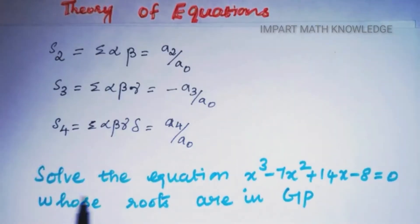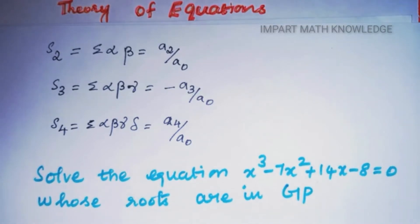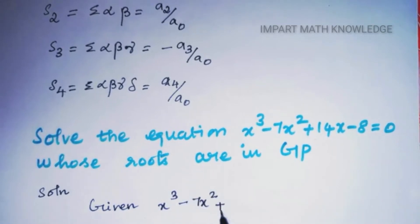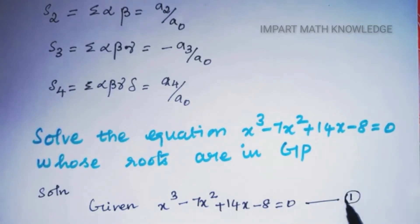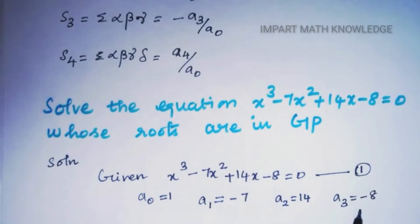The problem is: solve the equation x³ − 7x² + 14x − 8 = 0, whose roots are in GP. The condition given is that the roots are in GP form. For a third-degree equation, the roots are a/r, a, ar. Here, a0 = 1, a1 = −7, a2 = 14, and the constant term (a3) is −8.